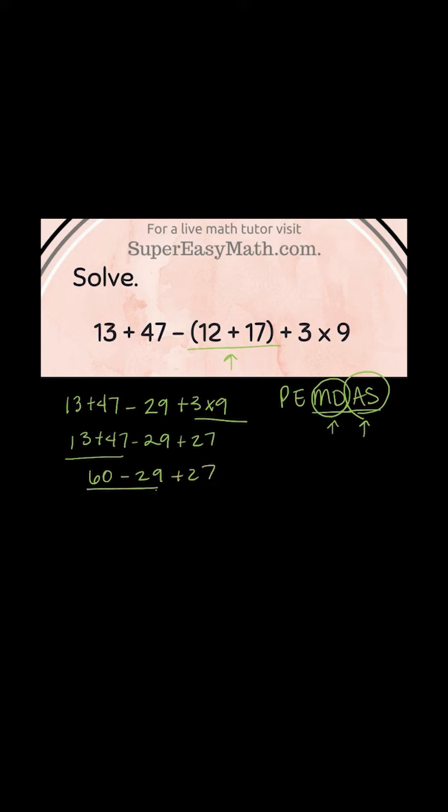Now I'm going to solve just this part. 60 minus 29 gives me 31 plus 27 over here. Now 31 plus 27 gives you 58. 58 is your answer.